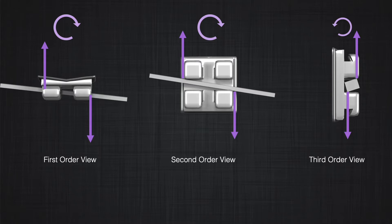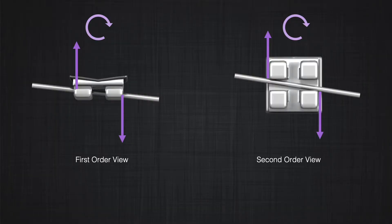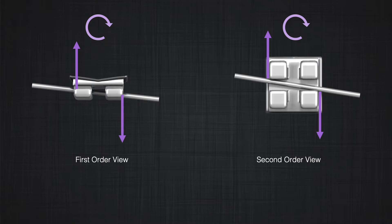We have two types of wires in orthodontics: round wire and rectangular wire. Can both produce all three types of couples in a rectangular bracket slot? A rectangular wire can produce a couple in all three dimensions. Can a round wire produce a couple in the first order view? Yes — there is not much difference between round and rectangular wire for producing a first order couple. It can rotate inside the bracket and touch the corner where the ligature ties, or the cap of a self-ligating bracket, producing a first order couple. Similarly, round wire can produce a second order couple by rotating inside the bracket.